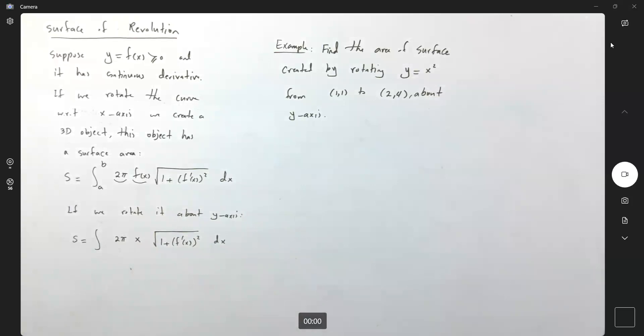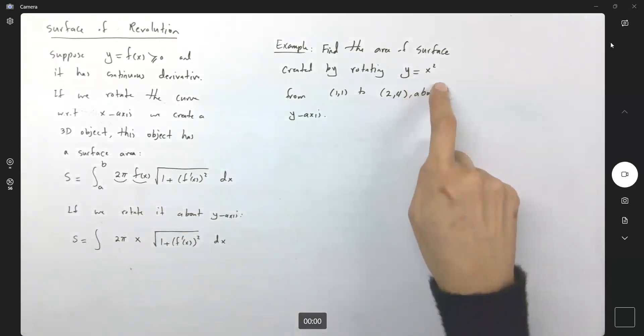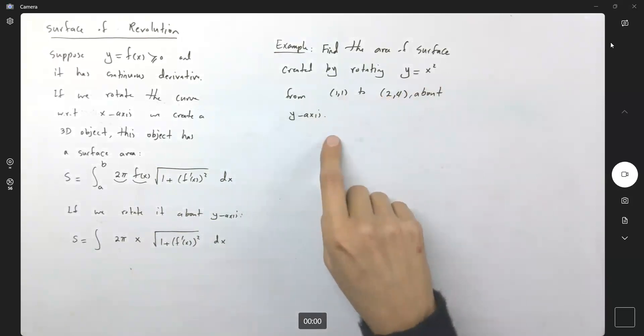Let's take a look at the following example. In this example, we have a parabola y equals x squared, and we are rotating about y-axis from the point (1,1) to the point (2,4). We want to know what is the area of this surface, so let us follow the formula.